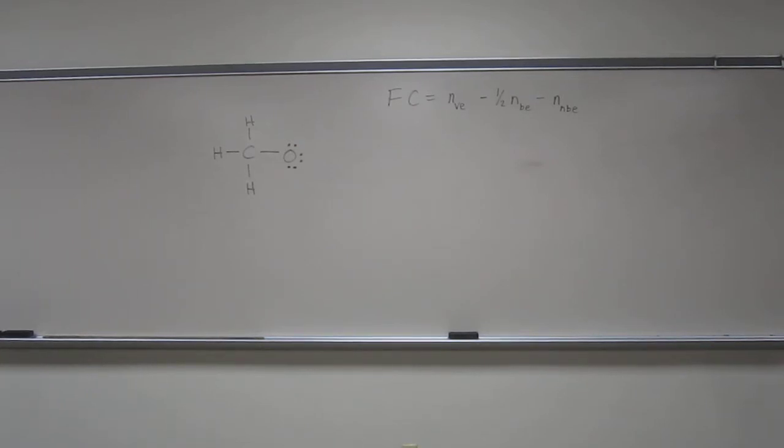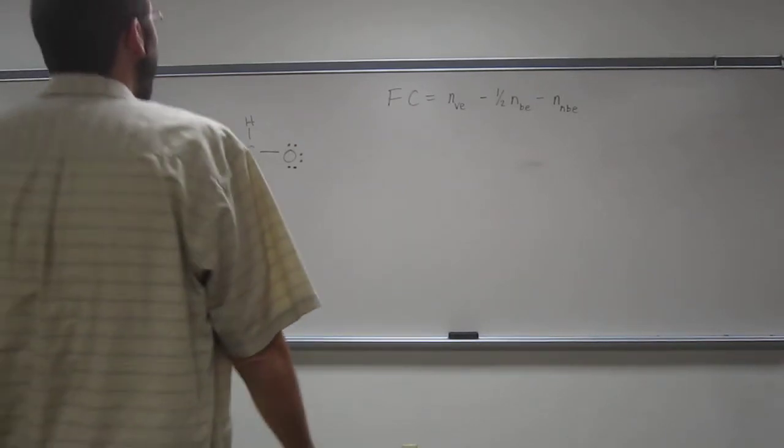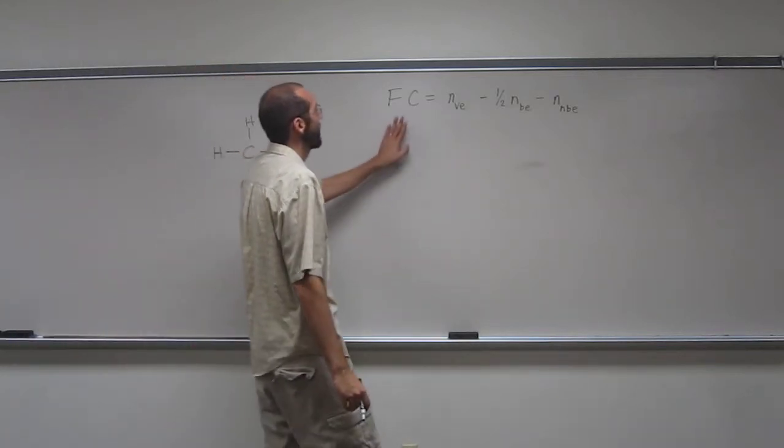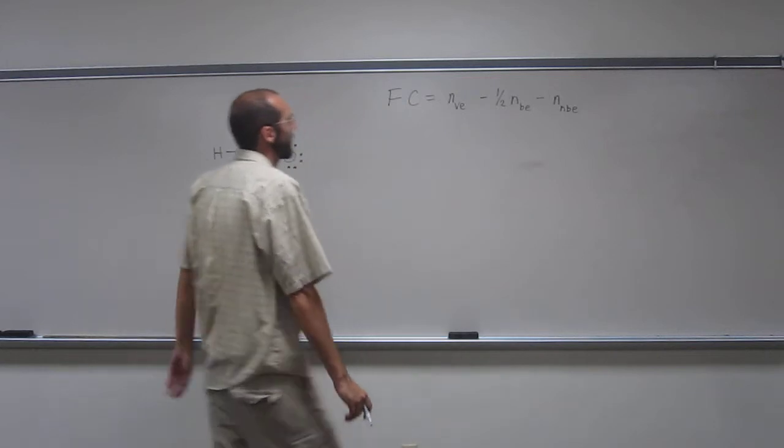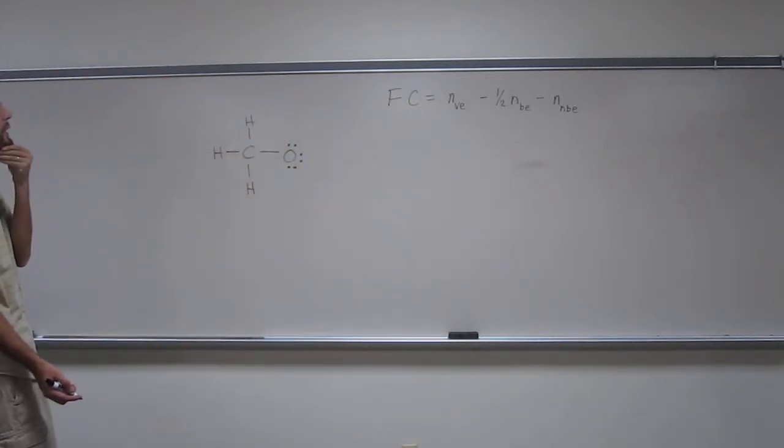So let's try the formal charge here now. Now that we have the formal charge equation, formal charge equals the number of valence electrons minus half the number of bonding electrons minus the number of non-bonding electrons.